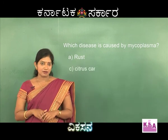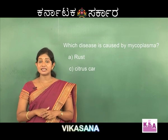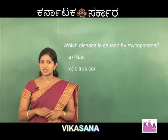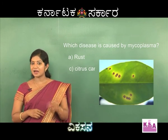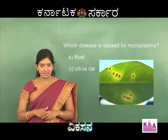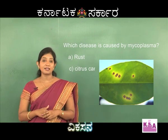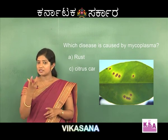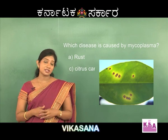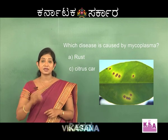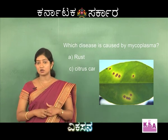Citrus canker is the third option. This is a disease which is caused in citrus species like lime, lemon, orange, etc. It is caused by a bacteria known by the name Xanthomonas. If you observe the fruit, plant, or leaves infected by this disease, it shows the presence of brown-coloured corky structures all over.